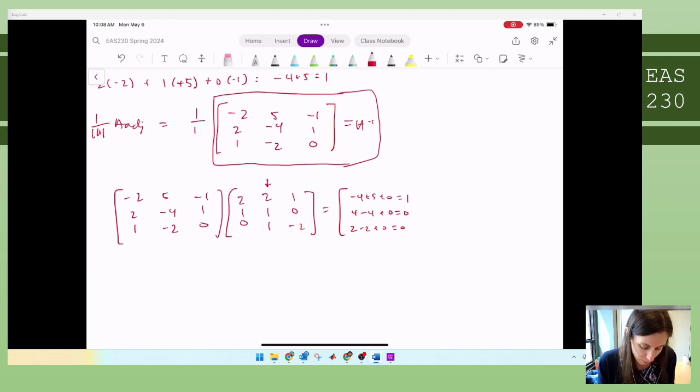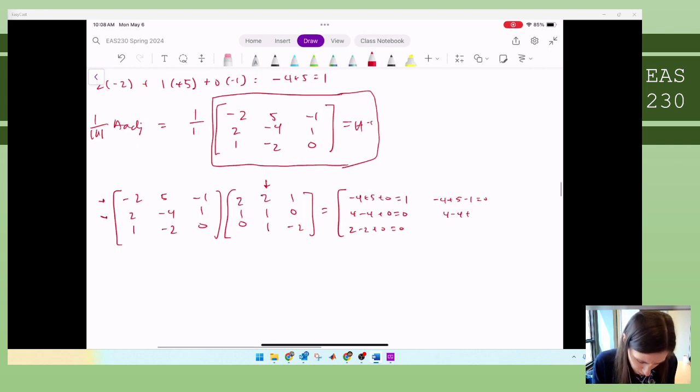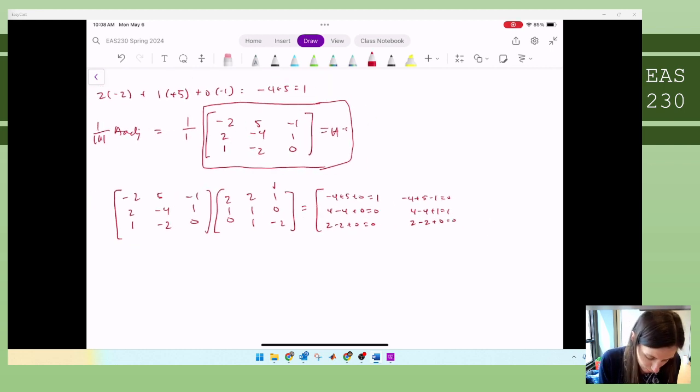Moving over. Column two, first row, negative four plus five minus one equals zero. What I expected. Second row, four minus four plus one equals one. That's what I expected. Third row, two minus two plus zero equals zero. What I expected. Okay, so I'm on the right track checking, make sure I know what I'm doing or that I got the right answer. Third column, first row, negative two plus zero plus two equals zero. What I expected. And then second row, two plus zero minus two equals zero. What I expected. Third row, one plus zero plus zero equals one. What I expected. So therefore I get identity. What I expected. So we're good. We're all fine. We're happy.